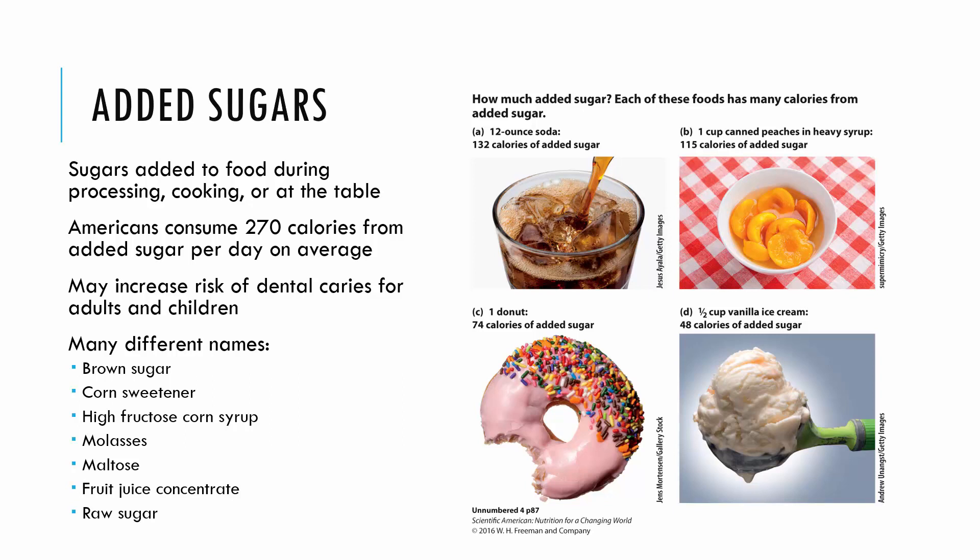Another important topic with carbohydrates is added sugars. On average, Americans consume about 270 calories from added sugar every day, which may increase the risk of dental cavities and other health concerns. Added sugar can appear under many names: fruit juice concentrate, corn sweetener, molasses, maltose, high fructose corn syrup — all of these are added sugars. The recommendation is to keep added sugar to less than 10% of your total calories.